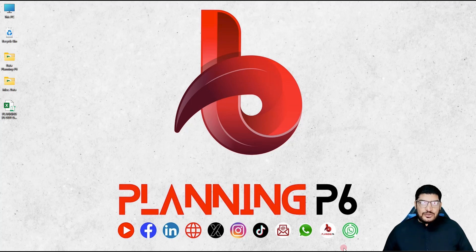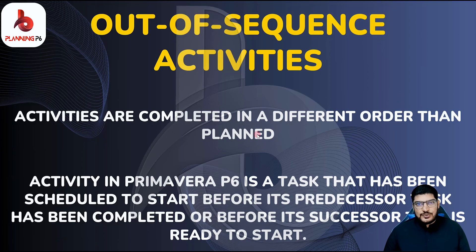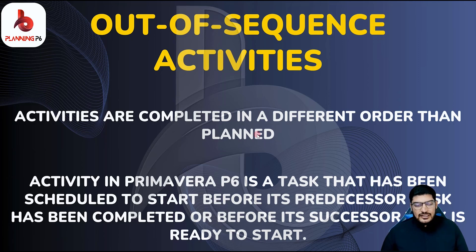Out-of-sequence activities are activities completed in a different order than planned. This is a short and true definition — you are planning activities to be completed after the predecessor, but somehow they come out of sequence and the logic goes wrong. A more detailed definition is that an activity in Primavera P6 is a task that has been scheduled to start before its predecessor has been completed or before its successor is ready to start.